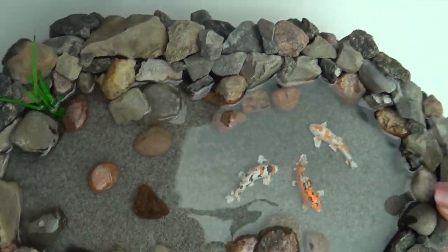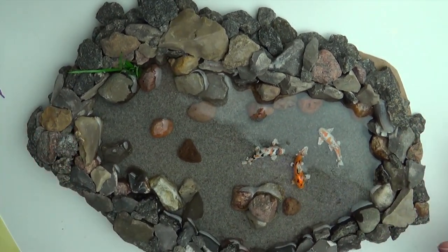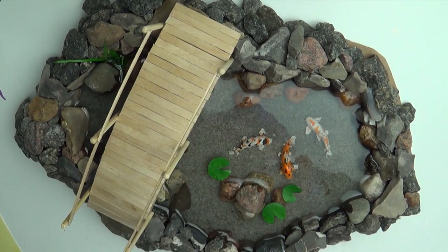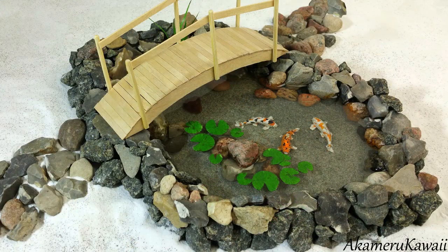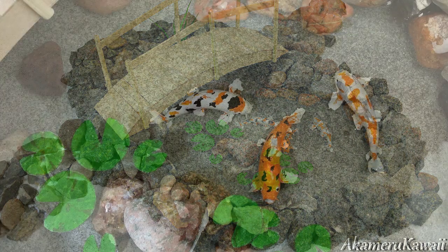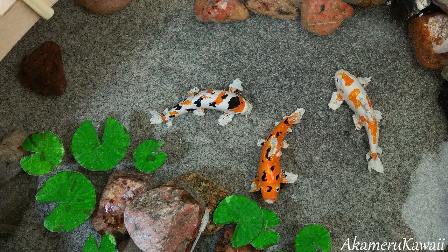Then all there's left to do is to figure out where you want your water lilies and glue them in place. And then we're done! Now you have your own miniature koi fish pond! Thank you so much for watching, I hope you enjoyed this video, leave me a like if you did and subscribe if you want to see more. Bye!